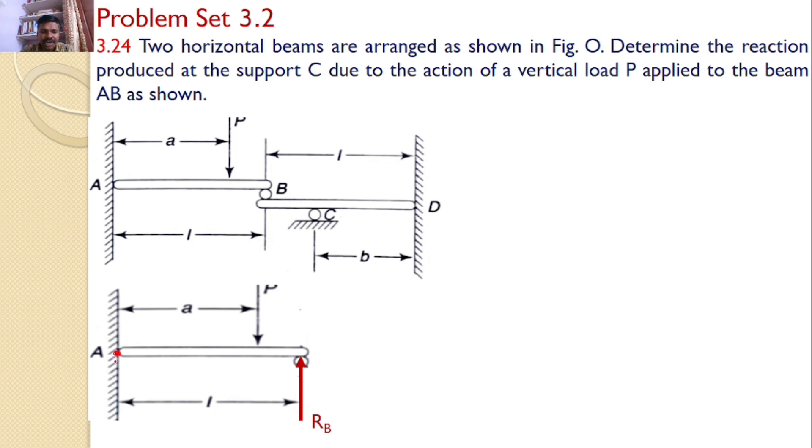So I will take moment about point A to maintain equilibrium. If I take moment about point A, P will introduce a moment in the clockwise direction. RB will introduce a moment in the counterclockwise direction. P is at a distance of A and RB is at a distance of L. Hence I can say P times A equals RB times L, or RB equals PA by L.